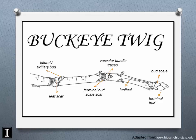Terminal bud scale scars mark one year's growth on the twig. You can measure the distance between consecutive bud scale scars to see how much the twig grew in a single growing season. This is useful even for yard trees — if the distance is only an inch, the tree may need more fertilizer or water; if it's 10 inches, it's growing at a good clip.